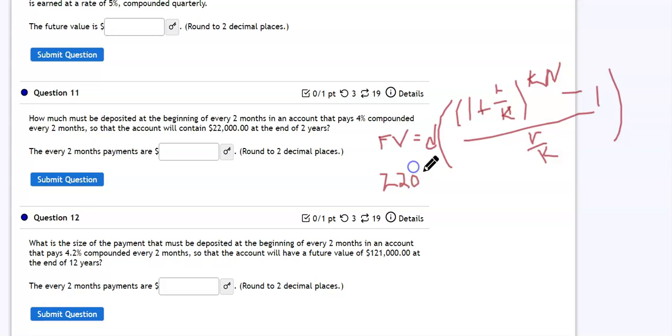We don't know the amount that's going to be deposited. We have 1 plus our interest rate is 4%, so 0.04. We're going to do it every two months, so that's six times per year. And we're only going to do this for two years, so this is six times two minus one. And then on the bottom, 0.04 divided by six.